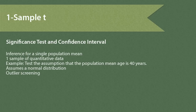The one-sample T. Using this procedure we can run a significance test and create a confidence interval for a single population mean. It requires that we have a random sample of quantitative data. For example, test the assumption that the population mean age is 40 years. Our sample data would be ages.